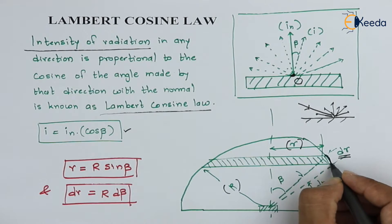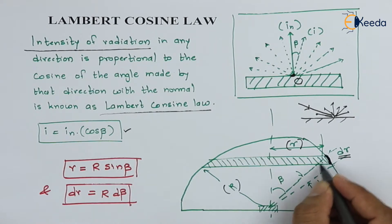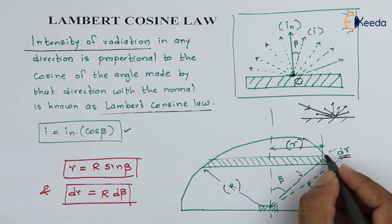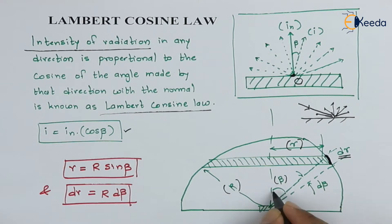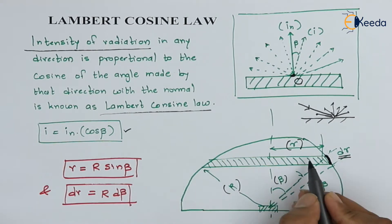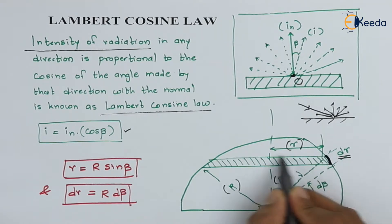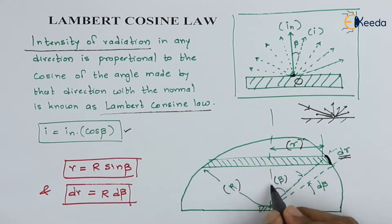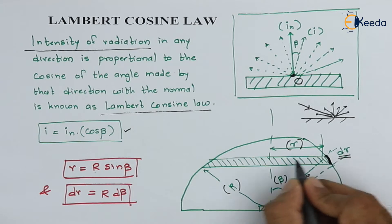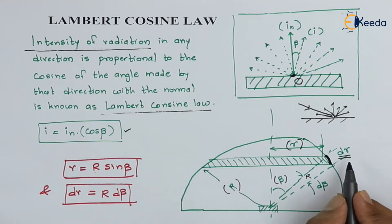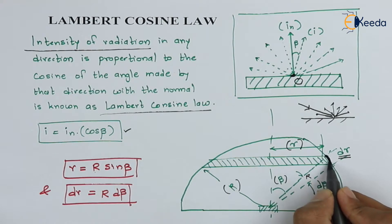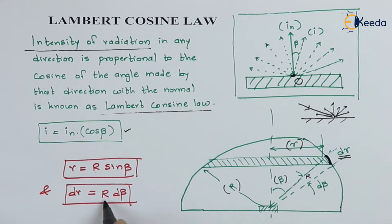Now, let us consider a small section of this ring making some angle D-beta, where this angle is beta — the angle of the small ring we have considered. With this nomenclature and geometry, we can derive that small r equals capital R times sine of beta, as seen from this triangle. Similarly, DR — that small curve — can be given as R times D-beta, where the angle subtended between the two radii is D-beta.